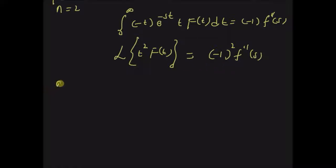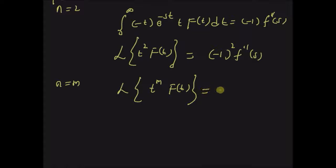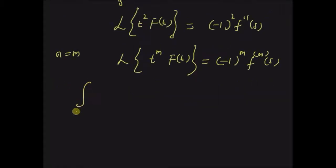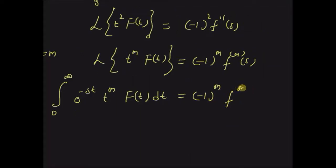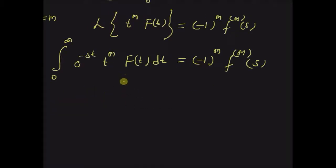Now let us assume that the theorem is valid for n equal to m, that is the Laplace transform of t^m · f(t) is equal to (-1)^m times the mth derivative of F(s). That is, the integral from zero to infinity of e^(-st) · t^m · f(t) dt is equal to (-1)^m times the mth derivative of F(s).